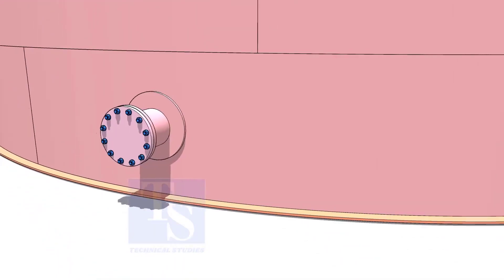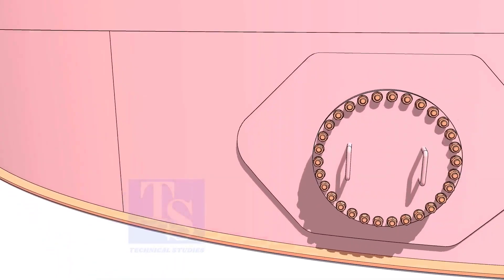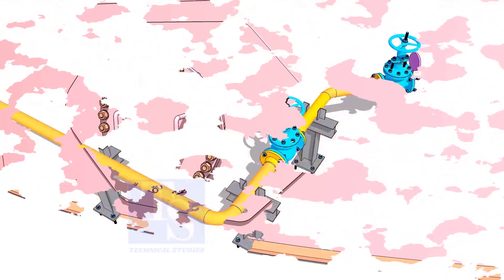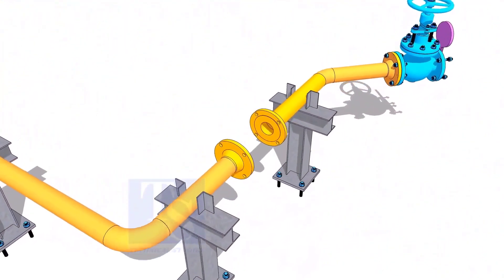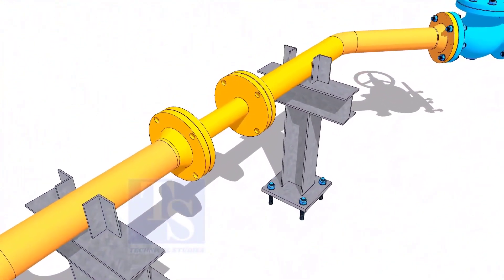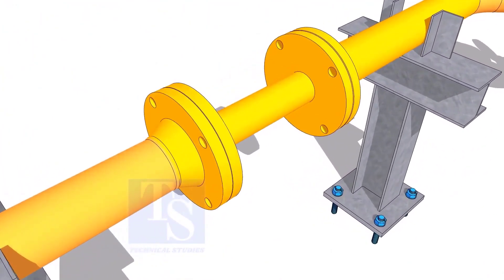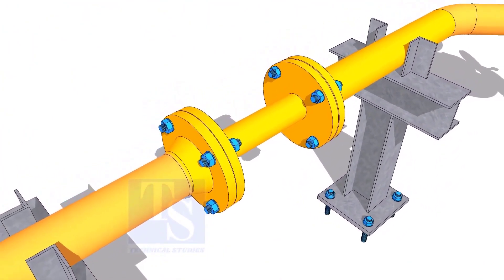Plate flanges are used for low-pressure services or to blind the nozzles of vessels, tanks, etc. for hydrotest purposes. Other uses of plate flanges include making temporary spools to replace valves and equipment on a piping system.